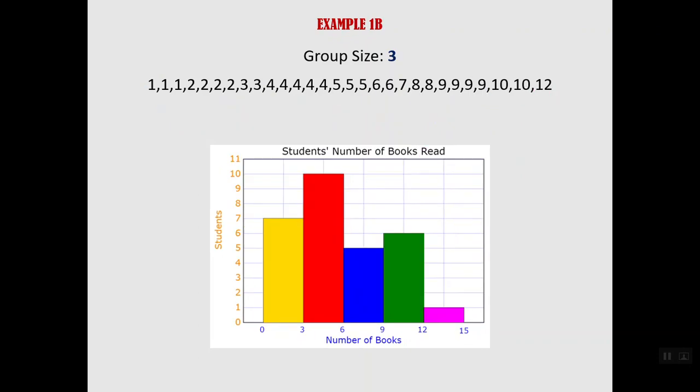Now we're going to take that same data and make a different histogram this time with a group size of 3. So now our yellow group is including 0, 1 and 2.